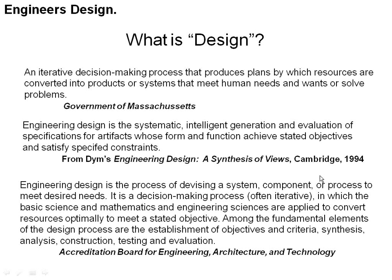ABET, the Accreditation Board for Engineering, Architecture, and Technology — which all engineering programs need to be accredited by every six years — defines engineering design as the process of devising a system, component, or process to meet desired needs. It is a decision-making process, often iterative, in which basic science, mathematics, and engineering sciences are applied to convert resources optimally to meet a stated objective. Among the fundamental elements of the design process are the establishment of objectives and criteria, synthesis, analysis, construction, testing, and evaluation. Key words here are: design is a process, design is decision-making, it's iterative, it involves science and mathematics, and design can be done optimally.